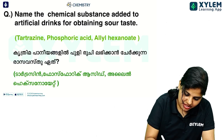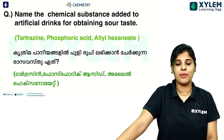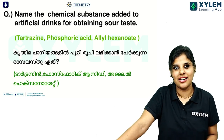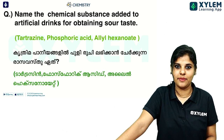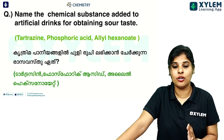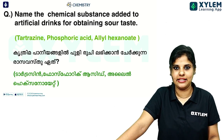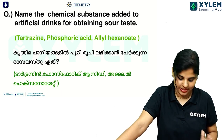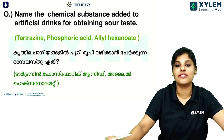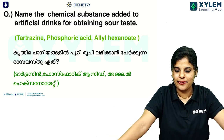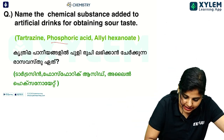Name the chemical substance added to artificial drinks for obtaining sour taste. What do you think about Pepsi or Mirinda? The options are Tartrazine, Phosphoric Acid, Allylhexonate. The answer is Phosphoric Acid.